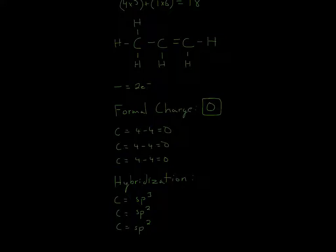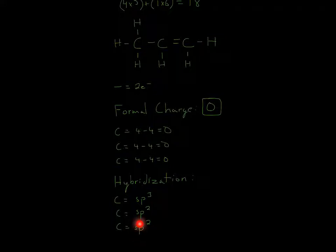Over here we have 1, 2, 3 — so 1 plus 2 is equal to 3, which gives 3 domains. Once again over here, 1, 2, 3 — so 3 domains. There's always a 1 right here, so 1 plus 2 is equal to 3, giving 3 domains.